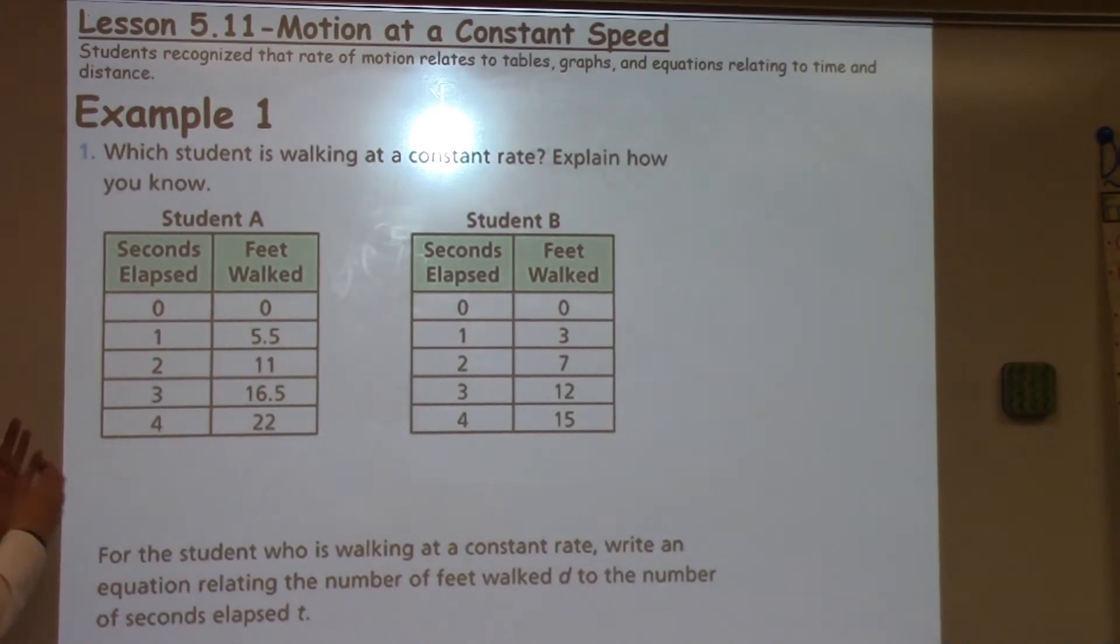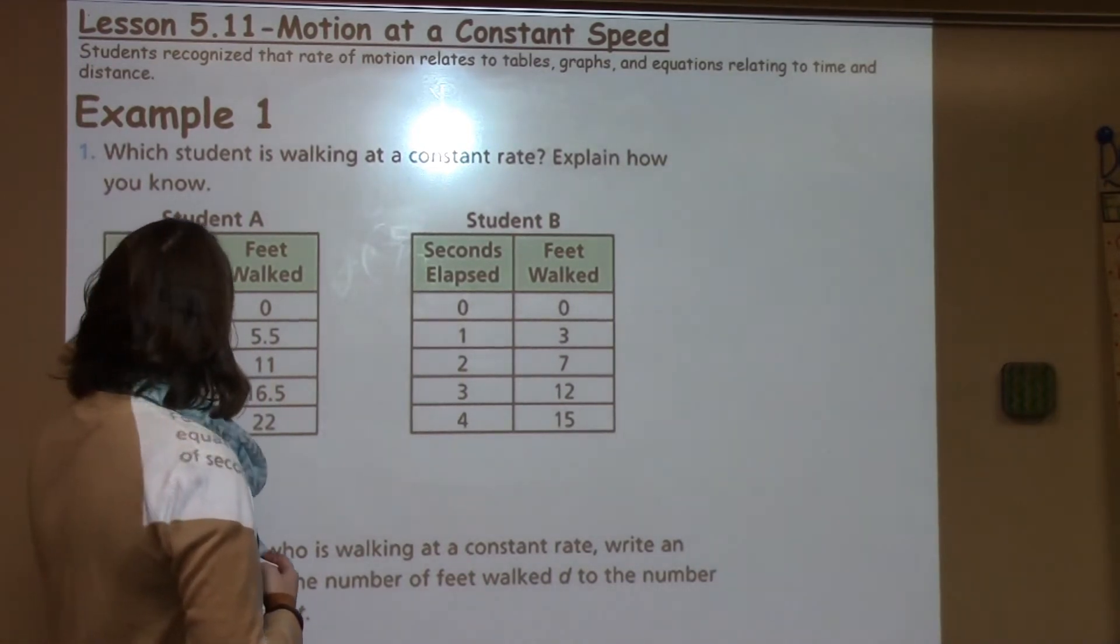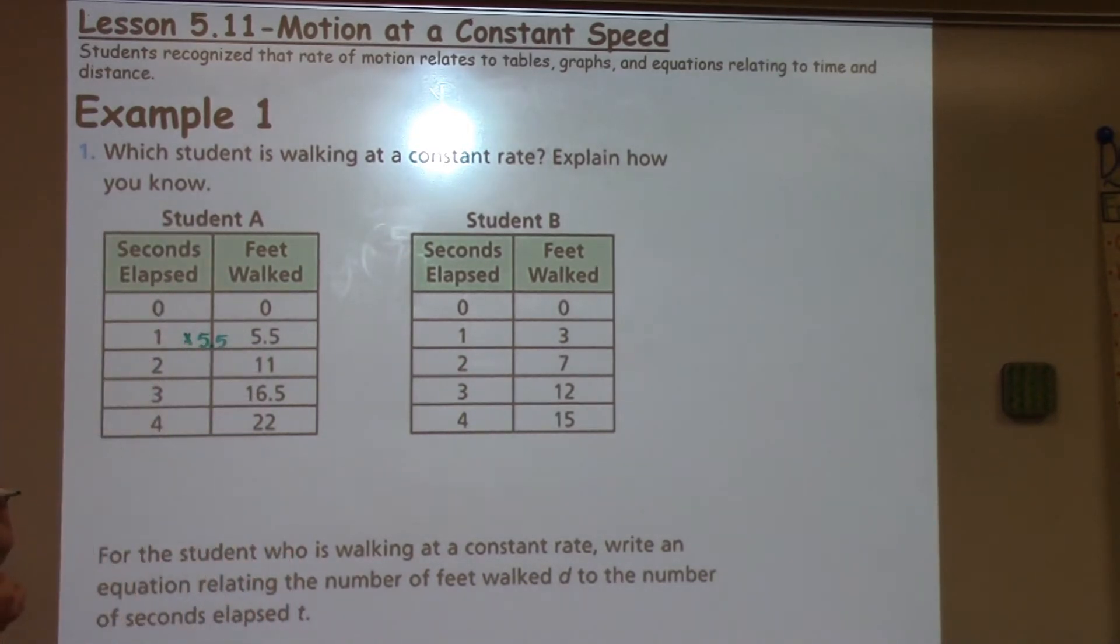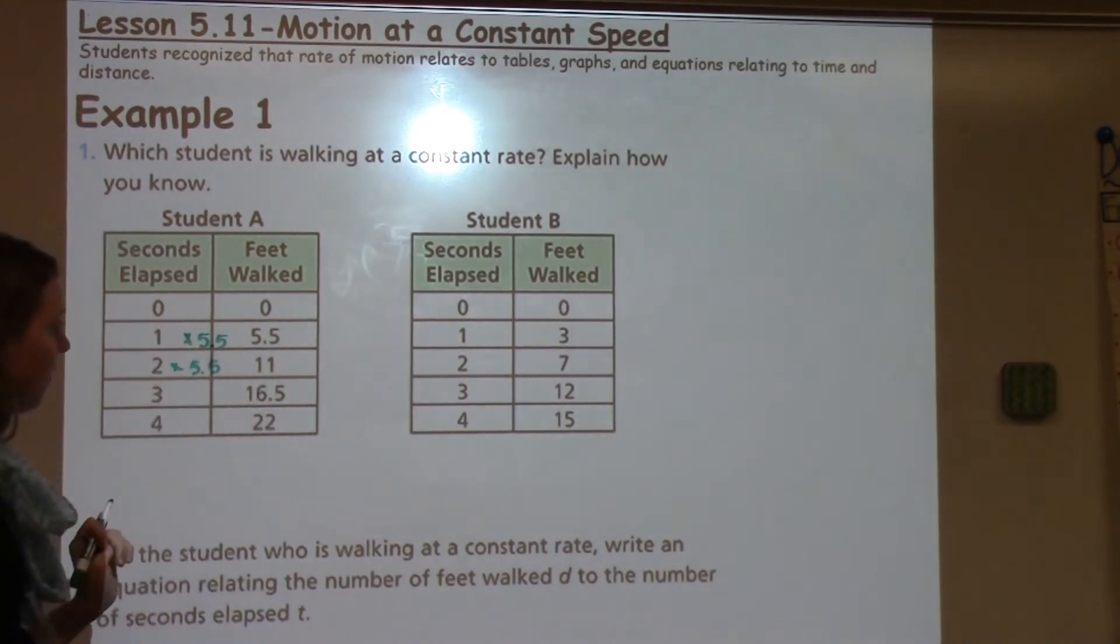When I'm looking at this, I need to see if it's at a constant rate. A constant rate means it's going to increase the same amount. I have 0, 0 - that's going to be the same. Then I have 1 to 5.5, which is times 5.5. I need to think about this one. If I take 2 times 5.5, will I get 11?